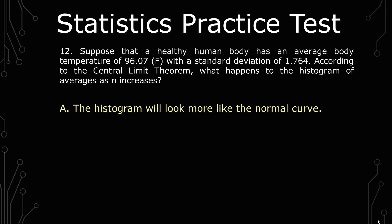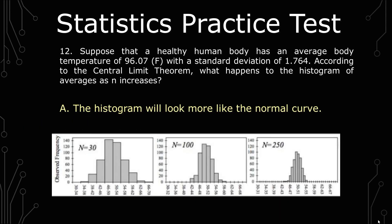And A states the histogram will look more like the normal curve. So that's the answer. What I have below is a graph showing that as n increases, the more it looks like the normal distribution.